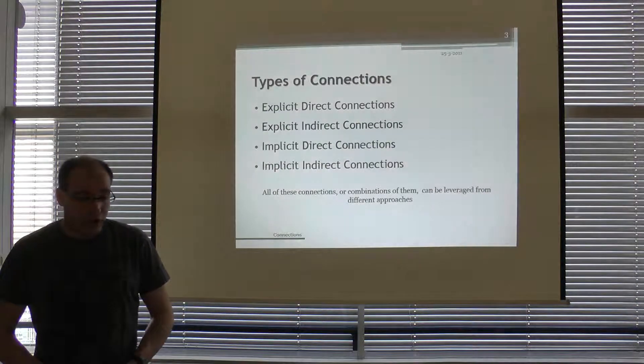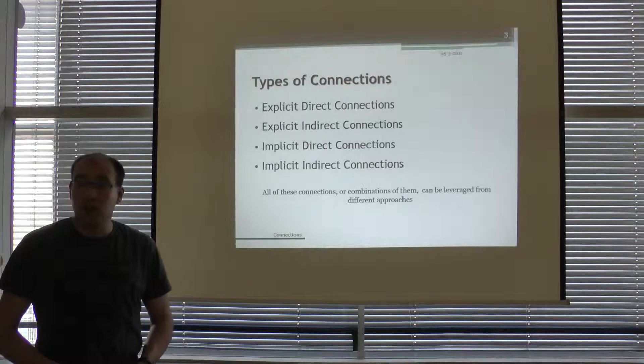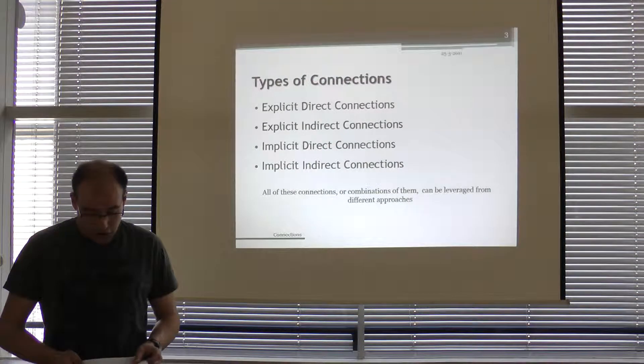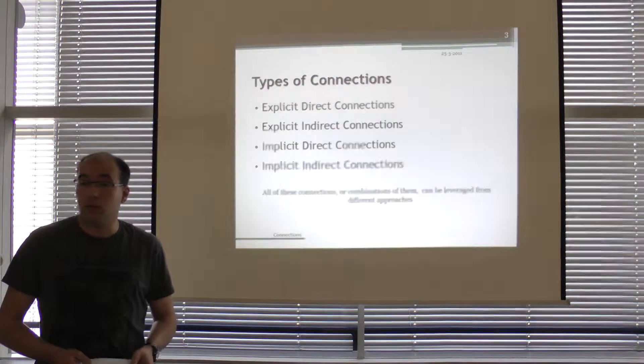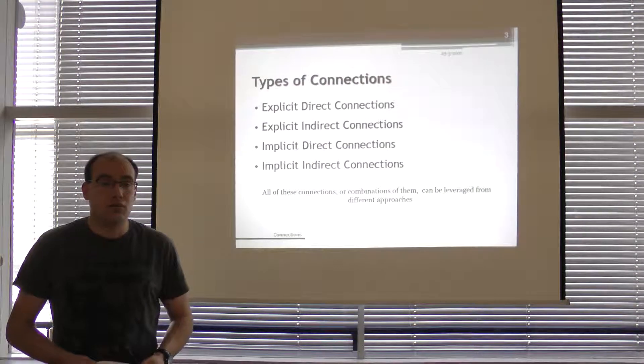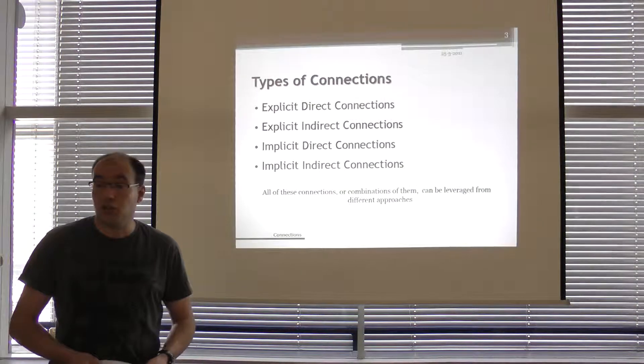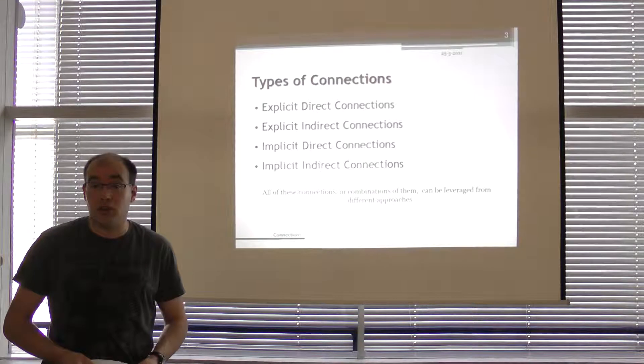The third one is the implicit direct connections. These are connections that are derived from textual information. For example co-authorship of users in scientific research work.